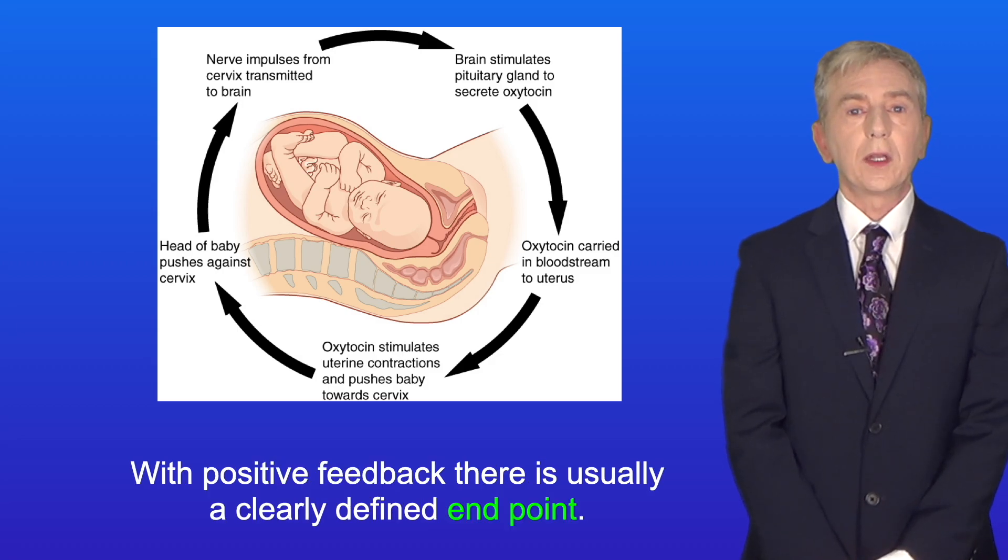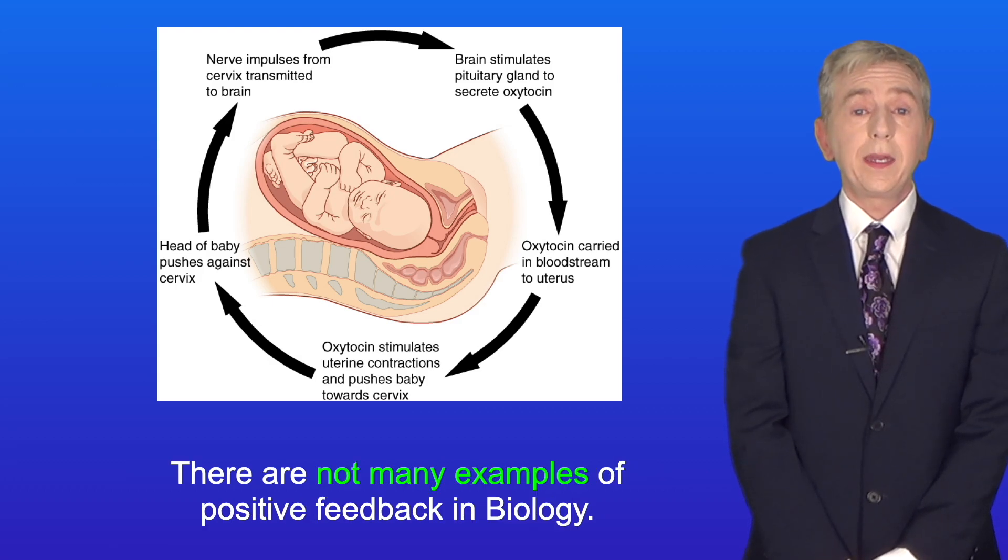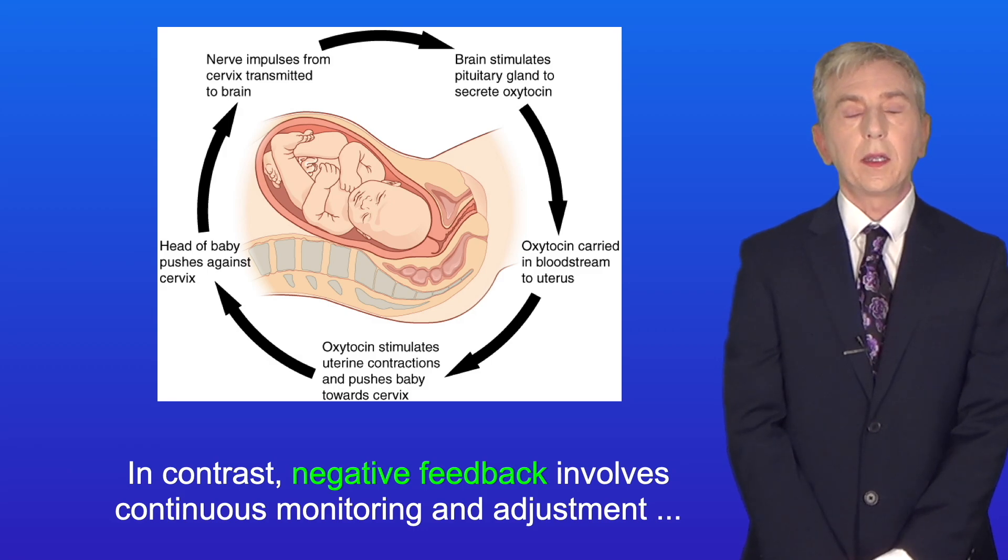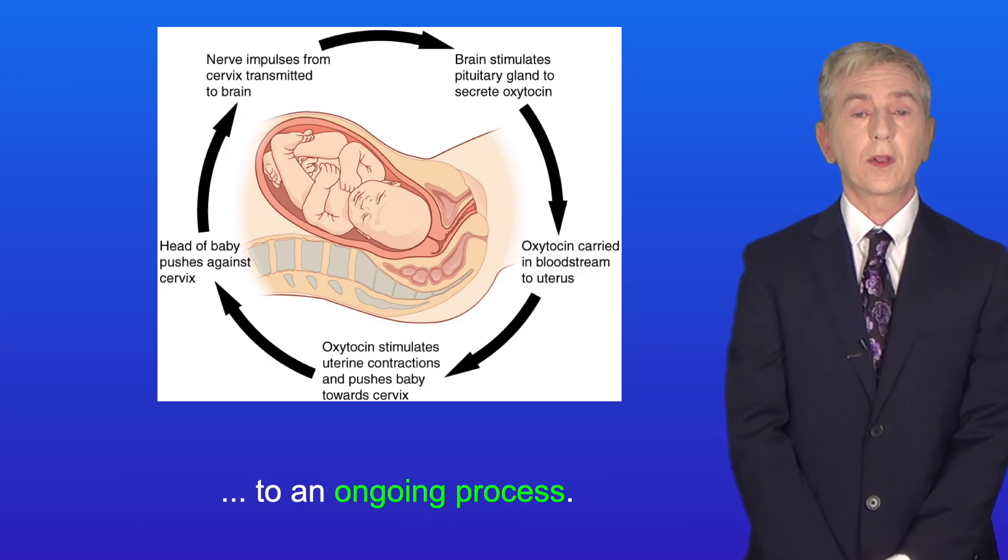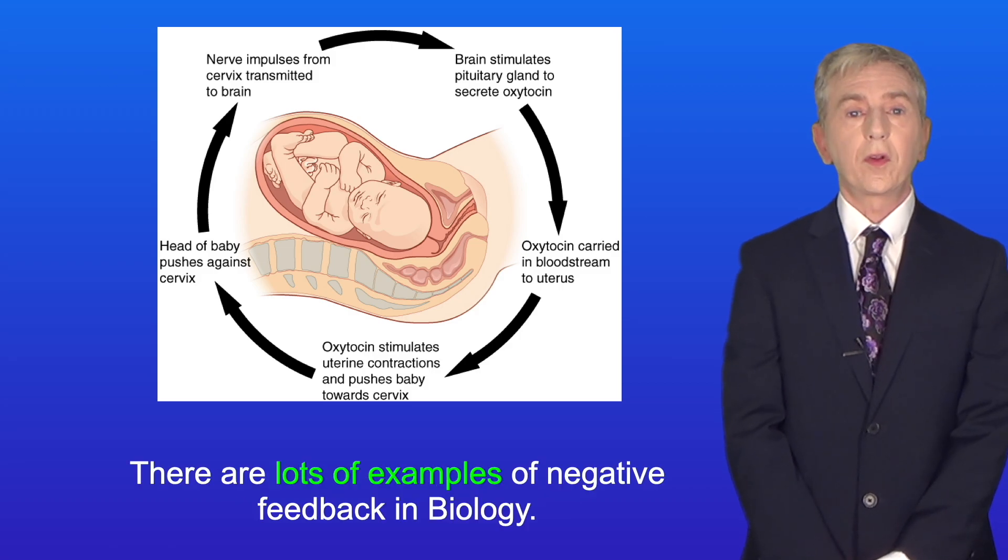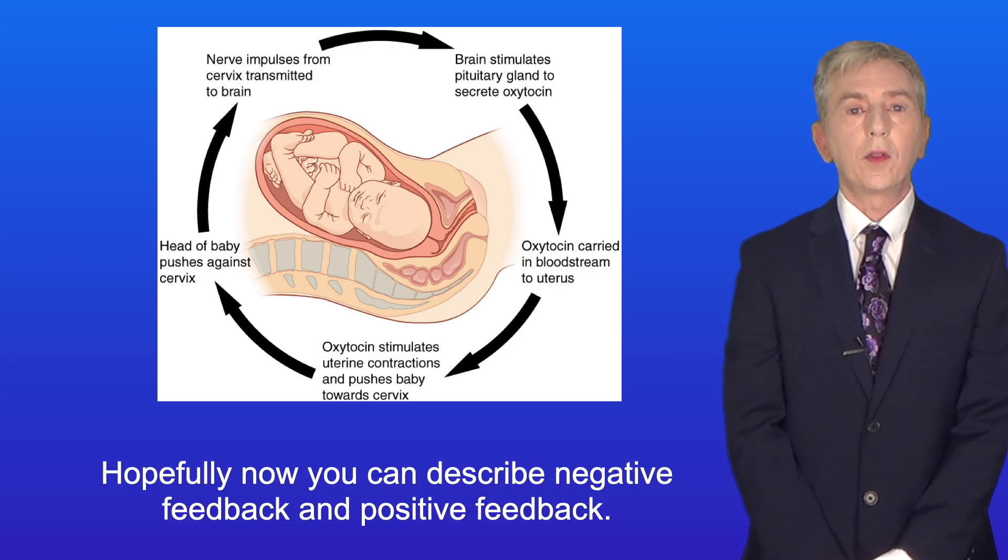Now with positive feedback, there's usually a clearly defined end point, and there are not many examples of positive feedback in biology. In contrast, negative feedback involves continuous monitoring and adjustment to an ongoing process, and there are lots of examples of negative feedback in biology. Okay, so hopefully now you can describe negative feedback and positive feedback.